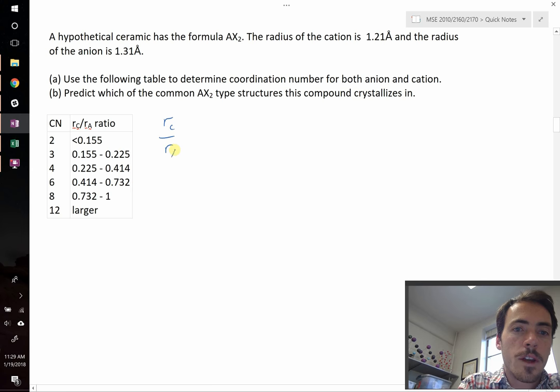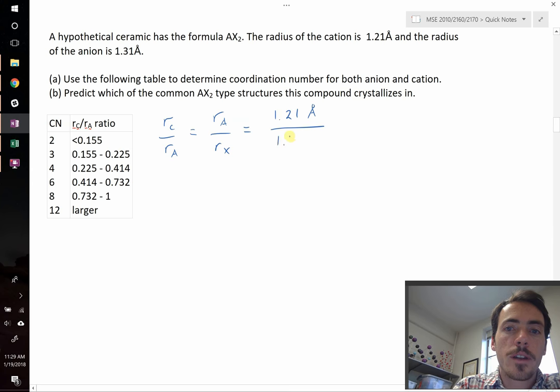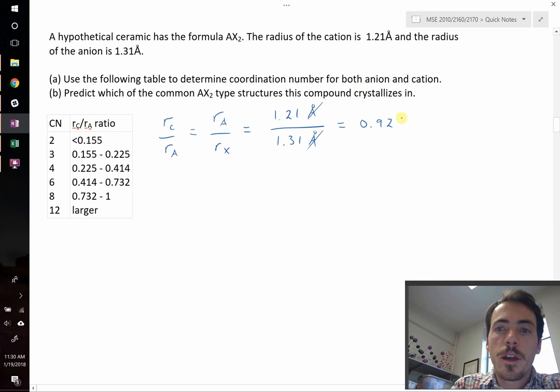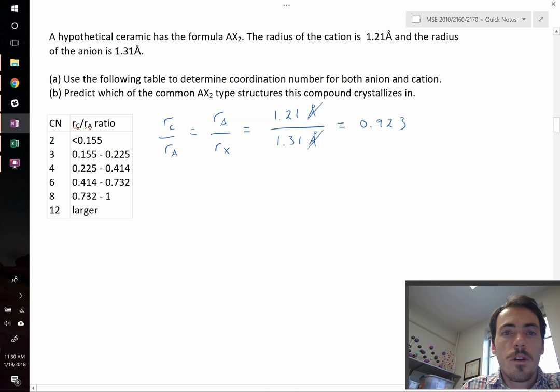Rc over Ra, well, our cation is our A ion, so let's actually write that Ra over Rx, since A is the name of our cation and X is the name of our anion. That's going to be equal to 1.21 angstroms divided by 1.31 angstroms. Angstroms cancel out and we get a dimensionless number. The number that I get when I punch this into my calculator is 0.923. So Rc over Ra is 0.923.